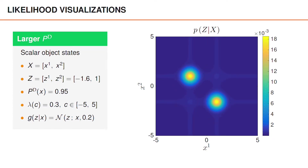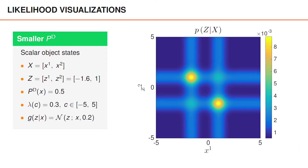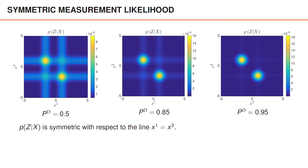If we increase the probability of detection from 0.85 to 0.95, we get the measurement likelihood visualized here. Because the probability of detection is higher, the probability of misdetection is lower, and the two associations that assign both measurements to objects dominate even more. If instead we lower the probability of detection to 0.5, the probability of misdetection is quite high, and the associations that assign just one measurement to an object become much more significant. We can also see that the measurement likelihoods are symmetric with respect to the line x1 equals x2 — the diagonal line across these images.